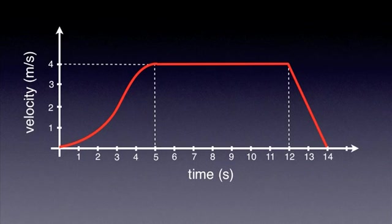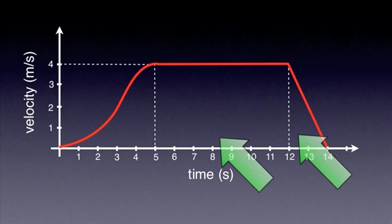A closer inspection of the graph allows me to compare the displacements during each section. The moving body covers the most in the middle section. I can say that the displacement of the car during the deceleration process is smaller than that during the acceleration process.